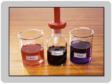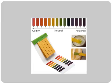Litmus has a red color in an acidic solution and blue in an alkaline solution. Now here is a color chart of a universal indicator. A universal indicator contains a mixture of dyes and changes color depending on the pH of the solution. The neutral pH is 7, in the middle. Moving towards the acidic side, the pH decreases and the color changes accordingly. The strong alkaline side follows the same pattern.